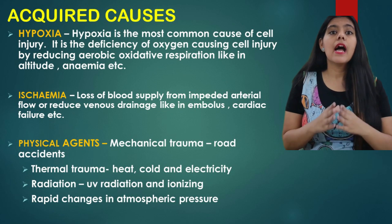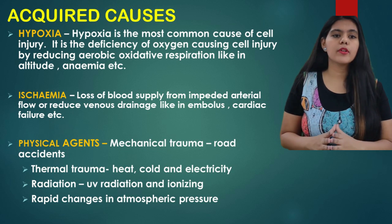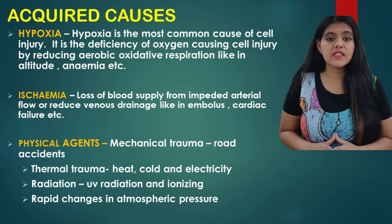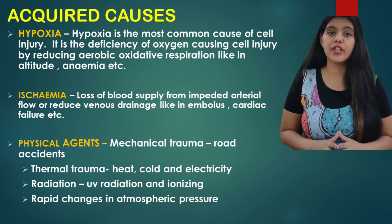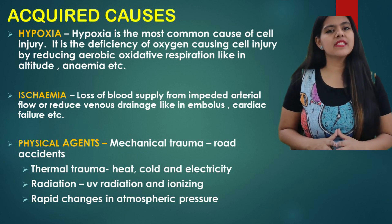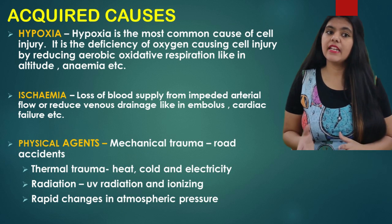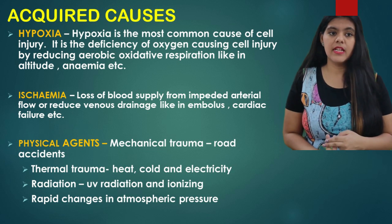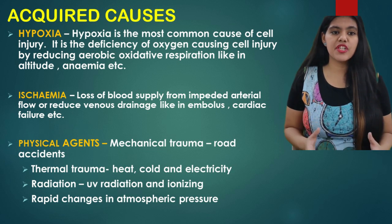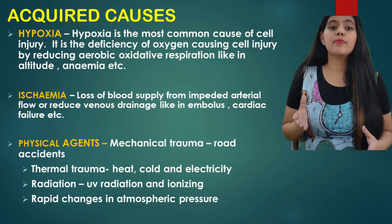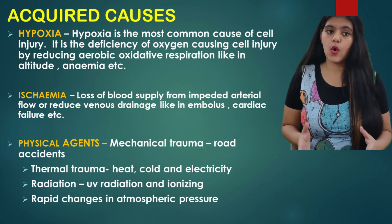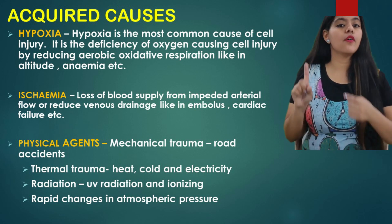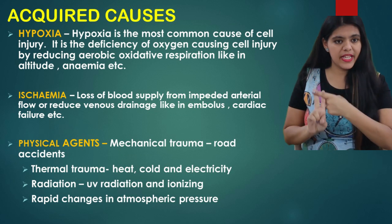The most common acquired cause is hypoxia, defined as deficiency of oxygen causing cell injury by reducing aerobic oxidation to the cell. Examples include high altitude conditions and anemia. The second cause is ischemia, which is loss of blood supply from impeded arterial flow or reduced venous drainage — for example, in cases of embolus or cardiac failure.